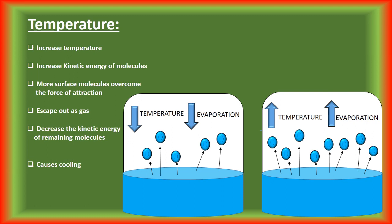Temperature also affects the rate of evaporation. Do you observe the quick drying of washcloths during a hot sunny day? The reason is that heat increases the kinetic energy of the surface molecules quickly, giving a greater number of molecules the chance to escape into the gaseous state, hence increasing the rate of evaporation. Whereas in winter, temperature is comparatively less, so fewer molecules can gain kinetic energy and escape. Therefore, the rate of evaporation is slow during winter. Temperature is directly proportional to the kinetic energy of molecules, so with increasing temperature, the kinetic energy increases, resulting in a greater rate of evaporation.